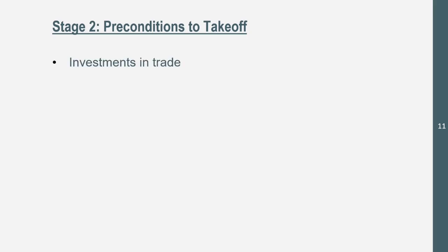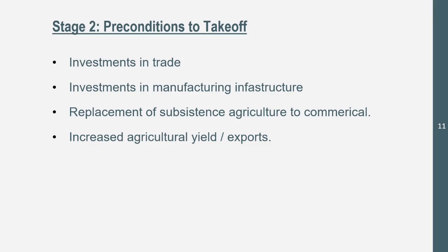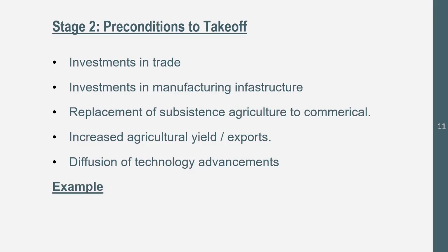Stage two is Preconditions to Takeoff. We see investments in trade — growing crops and trading with other countries. There are investments in manufacturing infrastructure and a shift from subsistence agriculture to commercial agriculture. Families are no longer farming just to feed themselves; they're producing surplus crops to sell and trade. This leads to increased agricultural yields and exports, and the diffusion of technological advancements. An example of a stage two country is Afghanistan.